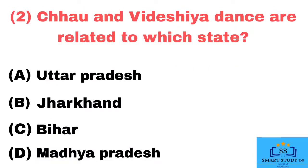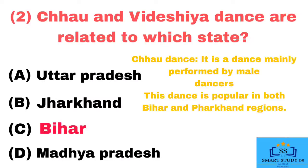Q2. Chau and Videshia dance are related to which state? Answer: Bihar. Chau dance is a dance mainly performed by male dancers and is popular in both Bihar and Jharkhand regions.